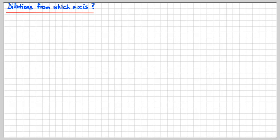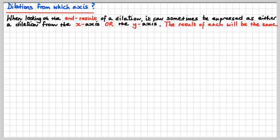Dilations from which axis? This is a very interesting point. When looking at the end result of a dilation, it can sometimes be expressed as either a dilation from the x-axis or from the y-axis, and the result of each will be exactly the same. This sounds really weird, but let me show you.